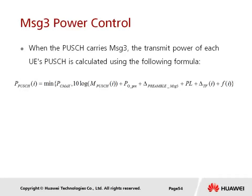PUSCH is used to carry data and also sometimes to carry Message 3, which is the RRC connection request. Message 3 is an important message for the UE to complete the random access procedure. Therefore, a specific Message 3 power offset must be included in the formula. The formula is the same as the standard PUSCH formula — accounting for expected power, path loss, transport format, and power adjustment — with one additional parameter: the power offset of Message 3.